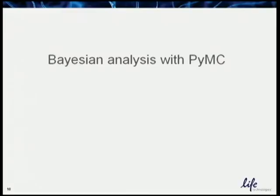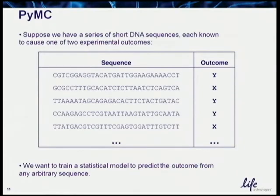Next, I'll talk about Bayesian analysis with PyMC — there's also a poster on PyMC here. This is a different kind of task from sequencing. Suppose we have a series of short DNA sequences corresponding to known outcomes: one corresponds to disease state Y, another to disease state X. We want to train a classifier that can take any arbitrary sequence and tell you which class it belongs to.